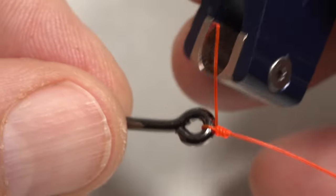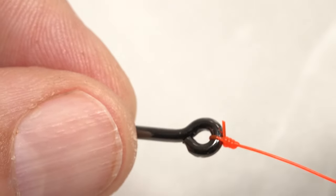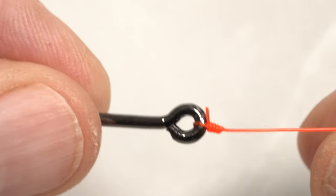With the knot firmly seated, snip or cut the tag end off fairly close. Do leave a little bit of tag standing proud from the knot in case of slippage.